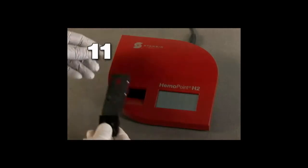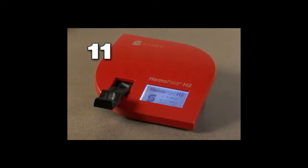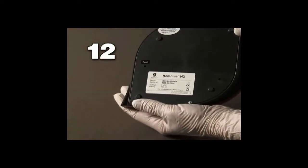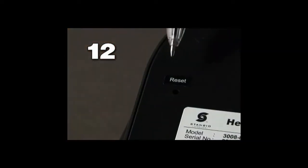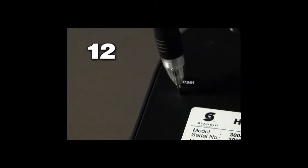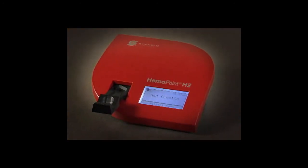Replace the cuvette holder, then reopen the Hemopoint H2 cuvette holder and ensure that the silver pin is locked in place. Reset the Hemopoint H2 by turning the photometer over and pressing the reset button using a narrow object such as a ballpoint pen or a paper clip. This reset serves to return the photometer to its default settings without changing user-specific settings significantly. However, the settings for date, time, and contrast will have to be readjusted. The Hemopoint H2 photometer is now ready to operate.